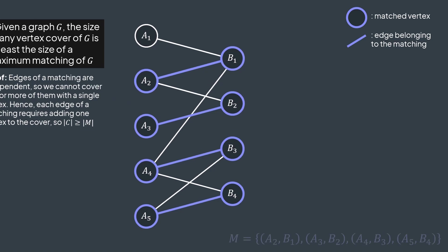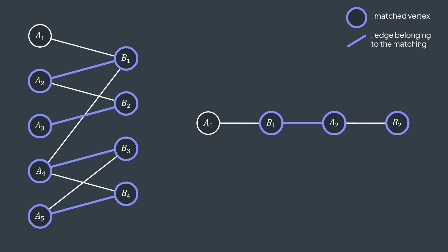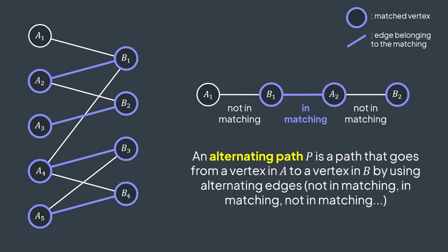Another important concept to understand for this proof is the concept of alternating path and augmenting path. Let's say we have this path a1 b1 a2 b2. A1 b1 is not in the matching, then b1 a2 is in the matching, then a2 b2 is not in the matching. It's alternating between not in the matching and in the matching. This is an alternating path. It goes from a vertex in A to a vertex in B by using alternating edges: not in matching, in matching, not in matching, and so on.